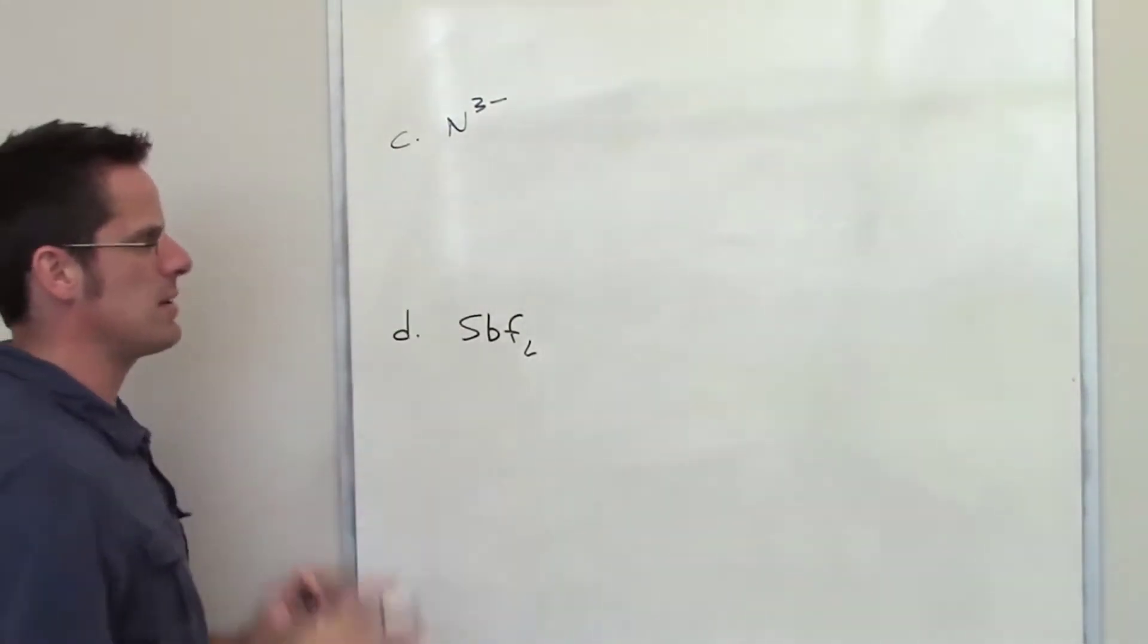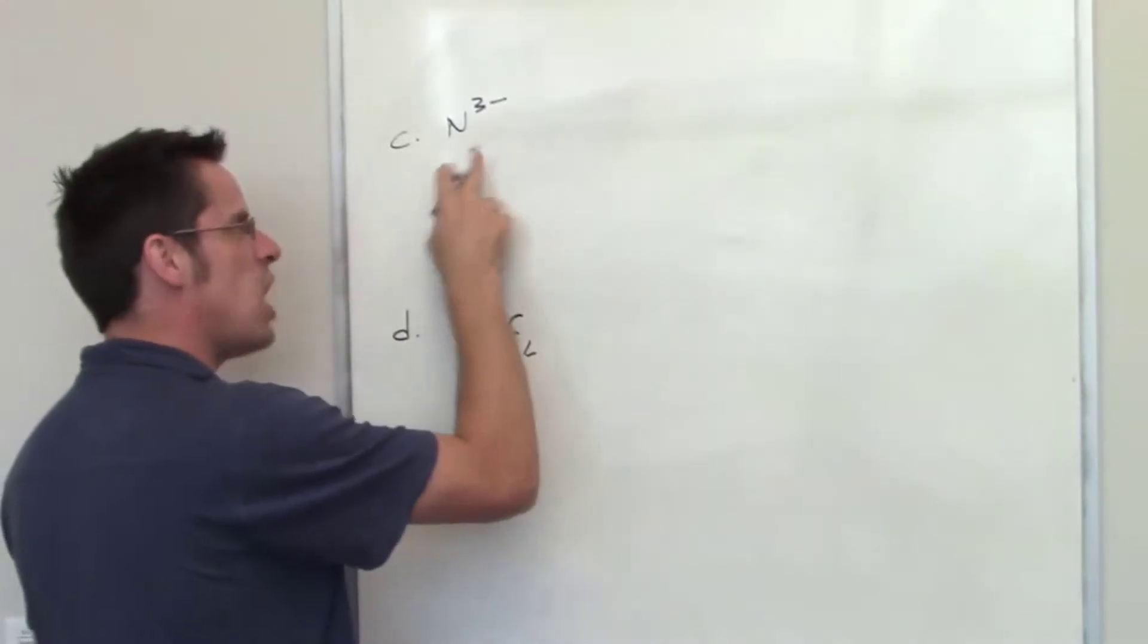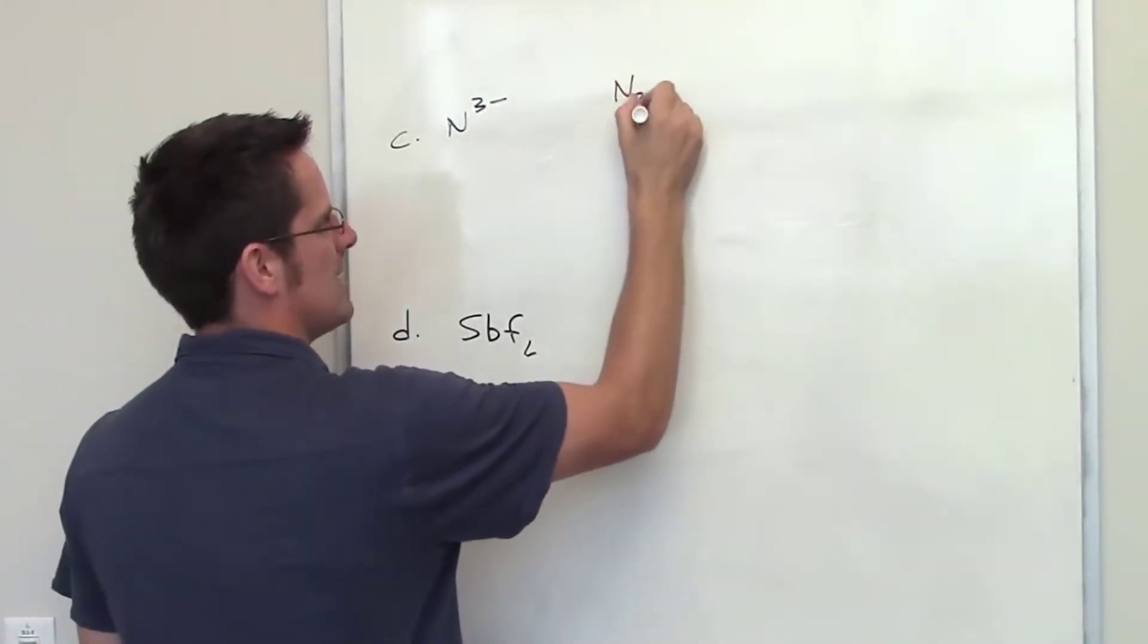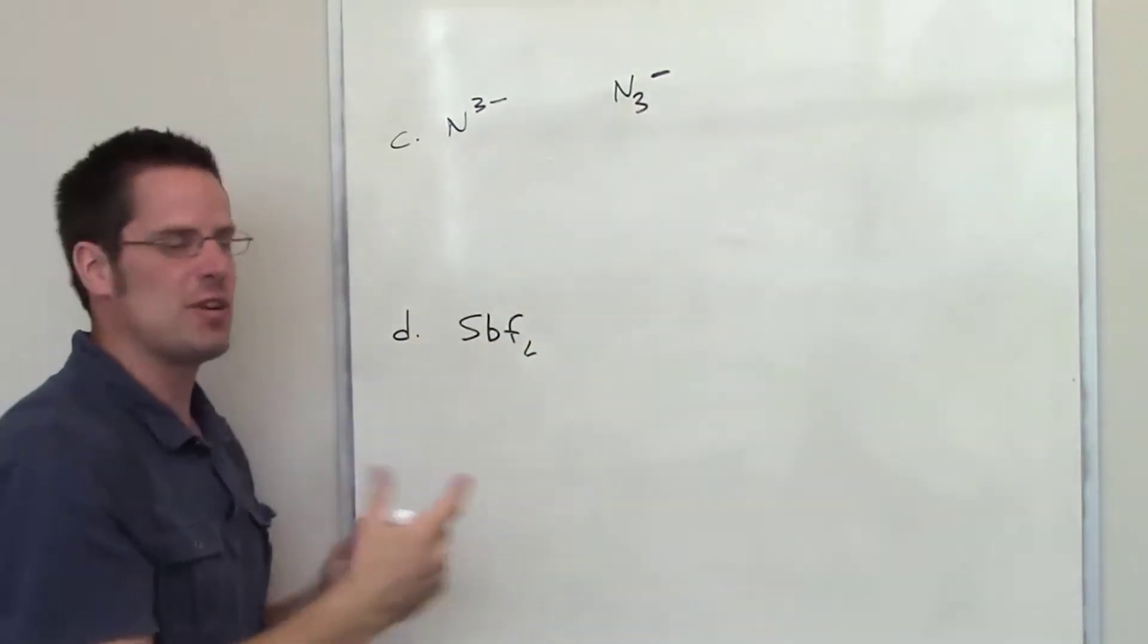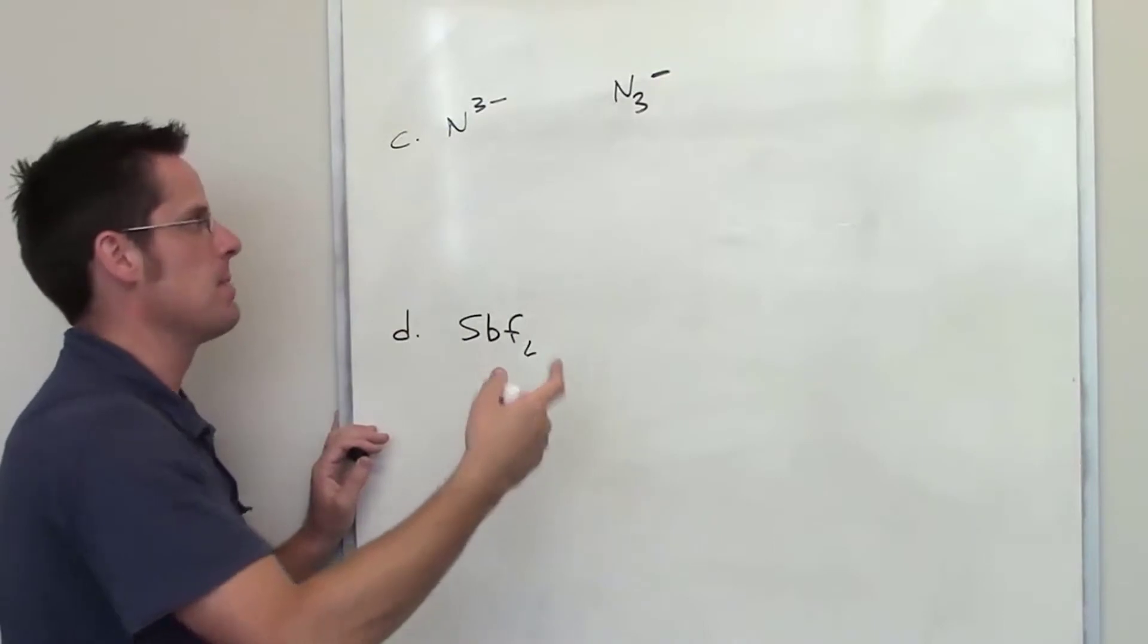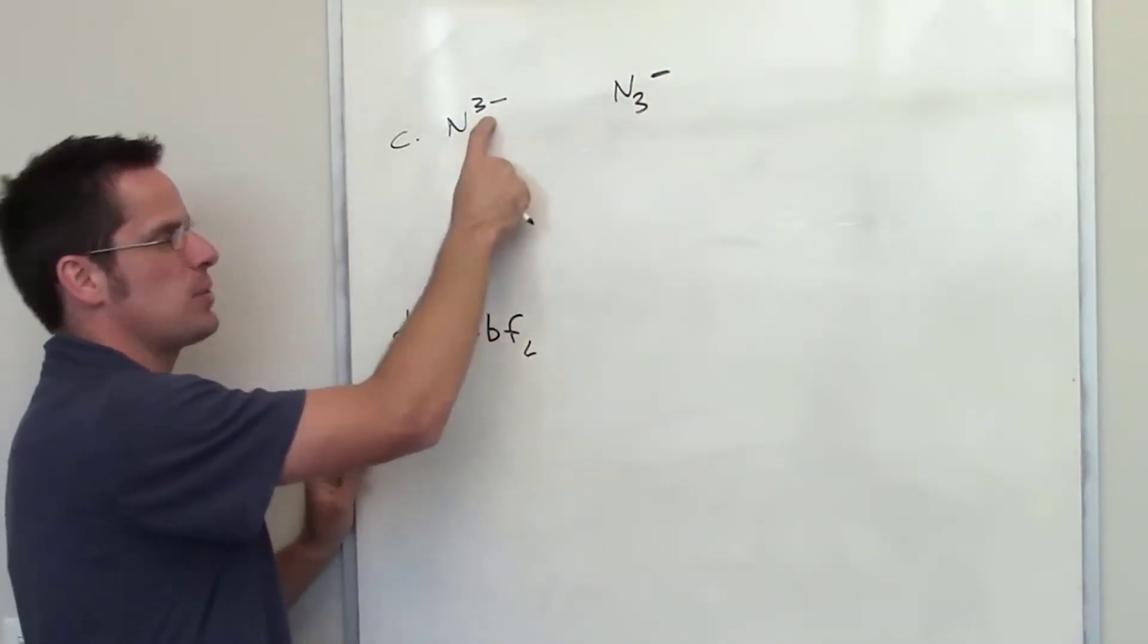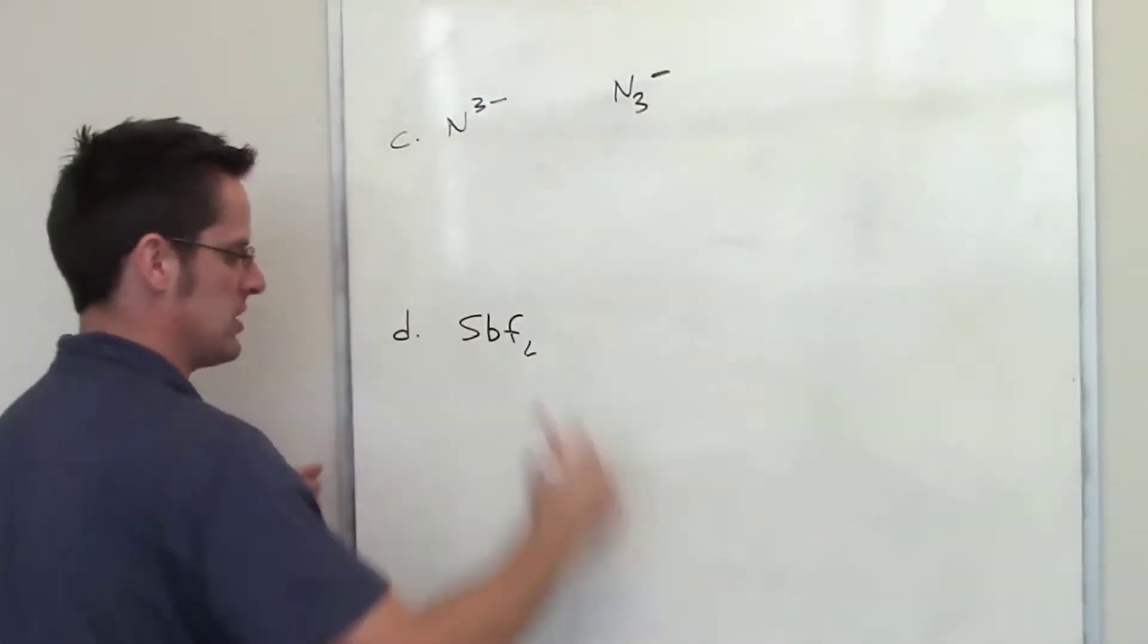This one right here is N3-. This might have been a typo on my part. I want you to know that this is not the same thing as this. This is three different atoms of nitrogen bonded together with one extra electron in the system. This is a single atom of nitrogen that has three electrons added to it. Hopefully that makes sense that these are different.